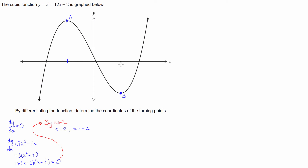So we've got two x-coordinates. Now we just have to figure out what the y-coordinates are. To find the y-coordinates, we substitute these two x-values into our original cubic function. So f of 2 is equal to 2 cubed minus 12 times 2 plus 2. So 2 cubed is 8, minus 24, plus 2, which equals negative 14. So point B is going to be (2, negative 14).